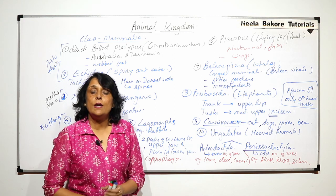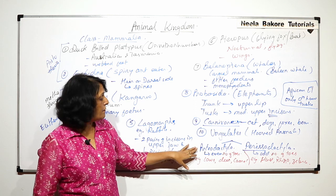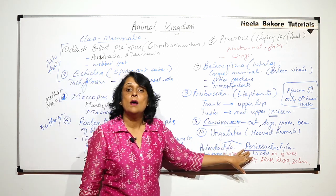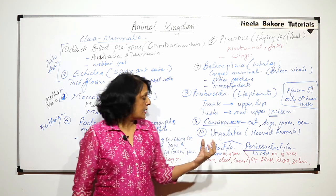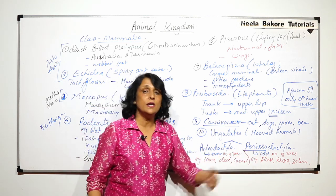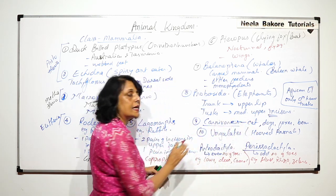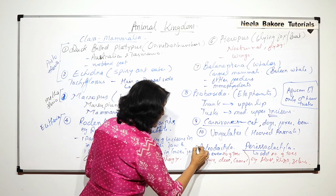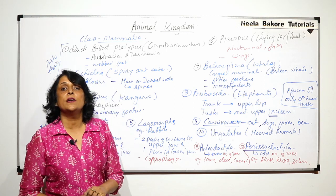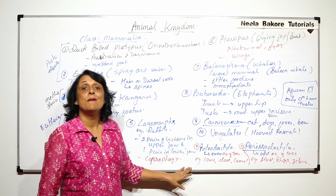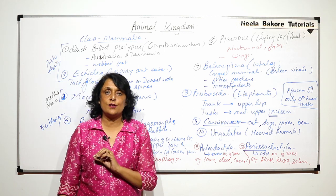So they are called ungulates because they have hooves, but number of toes would decide whether we place them in Artiodactyla or Perissodactyla. And the word artio is even and periso means odd. So we can have this as a separate category of ungulates as hoofed animals, and this as 11th and this as the 12th category. So these are some important categories of class Mammalia, and we have talked about some specific characteristic features.